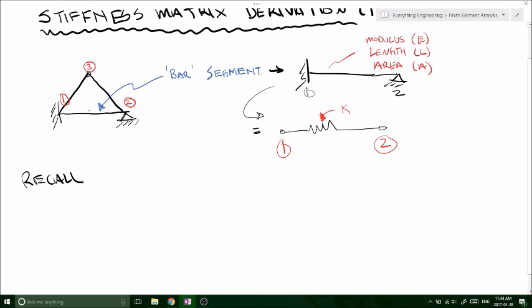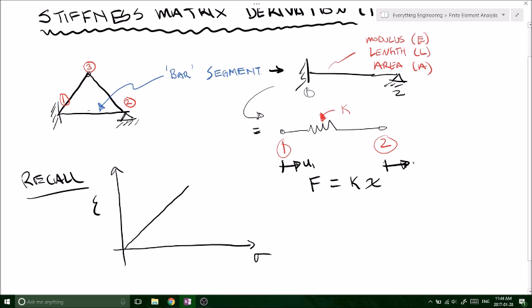If you'll recall, looking at our stress-strain diagram, we have linear movement between our stress and our strain. And that's the same as our F equals Kx, our force of our spring. K being the spring constant, x being the distance, and the force required to move each node a distance from its origin.